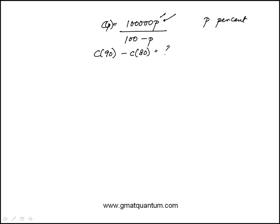So this would be, I just have to replace p with 90. And this would be, denominator would be 100 minus 90, and then replace p with 80 and find the difference.